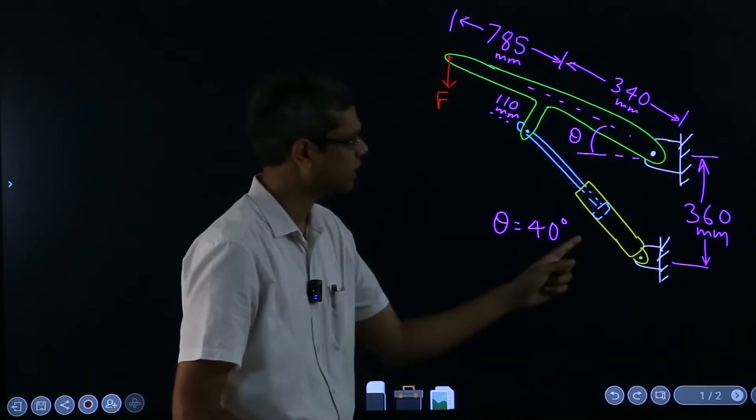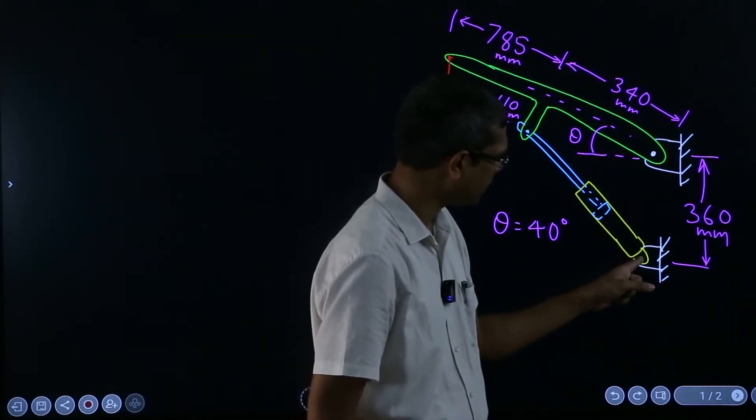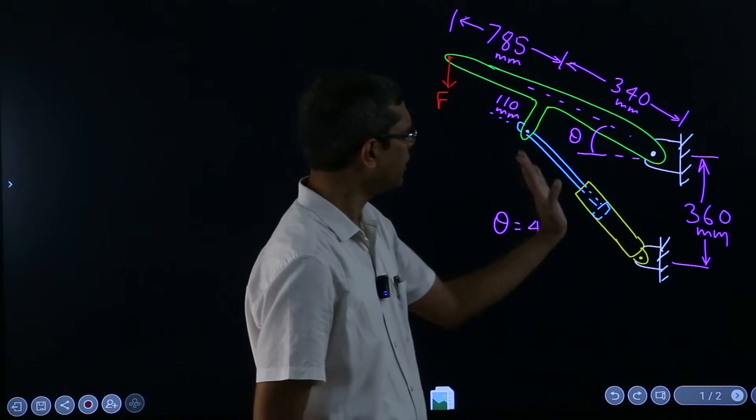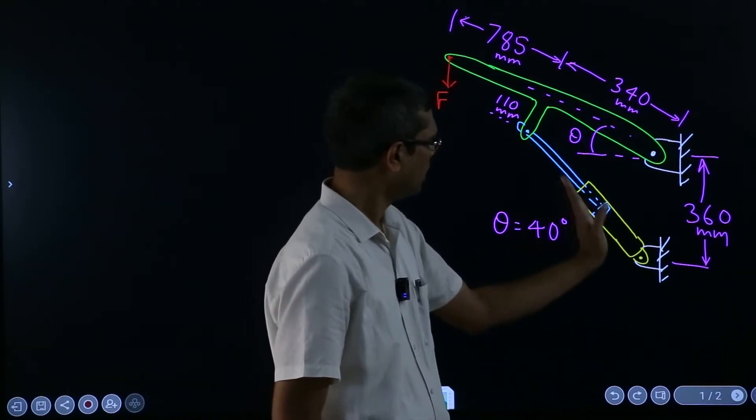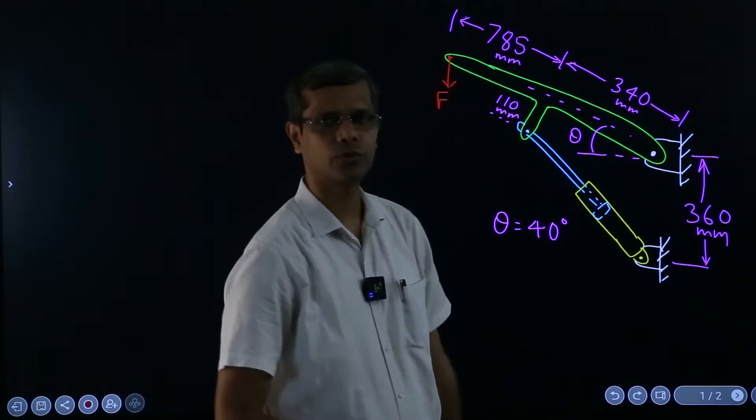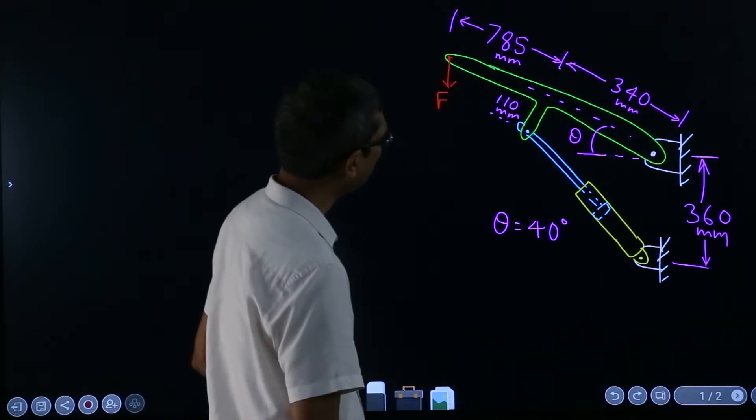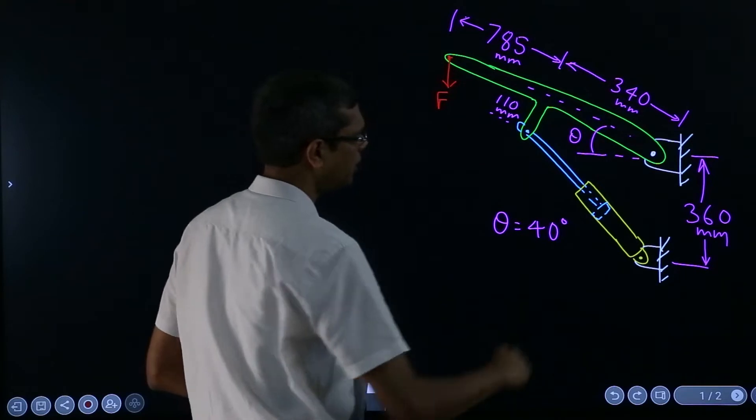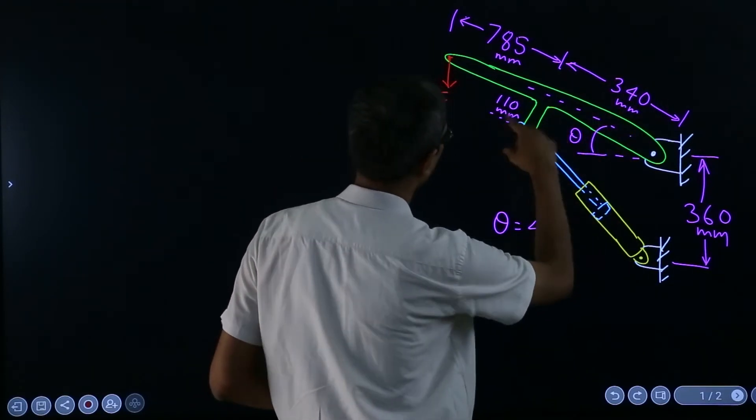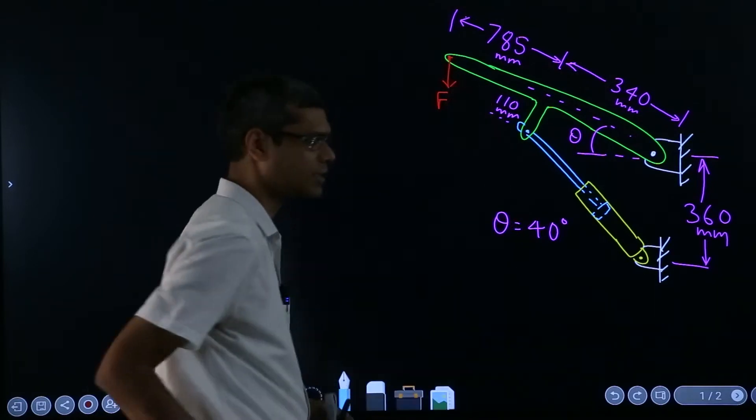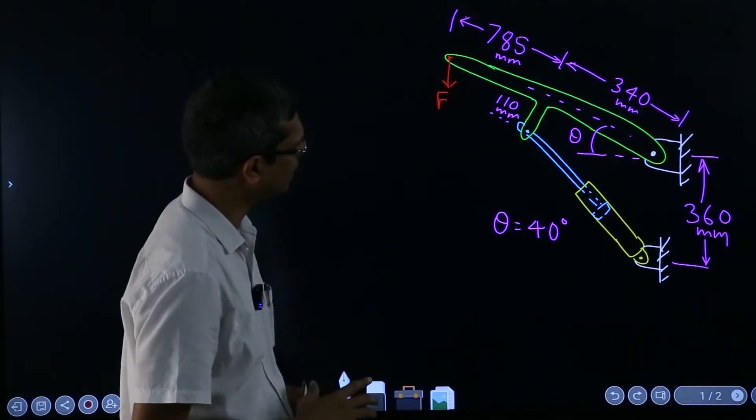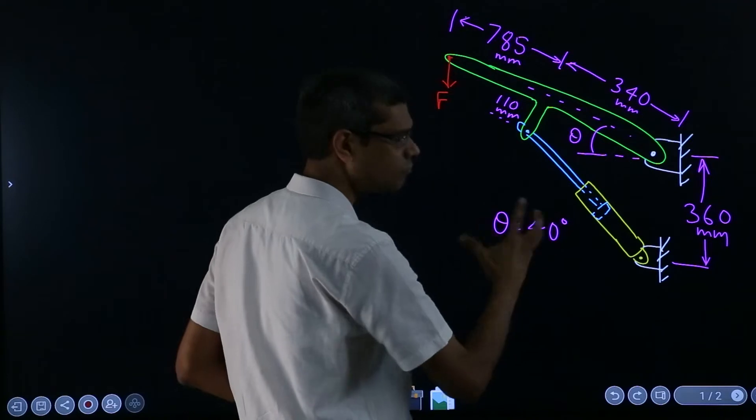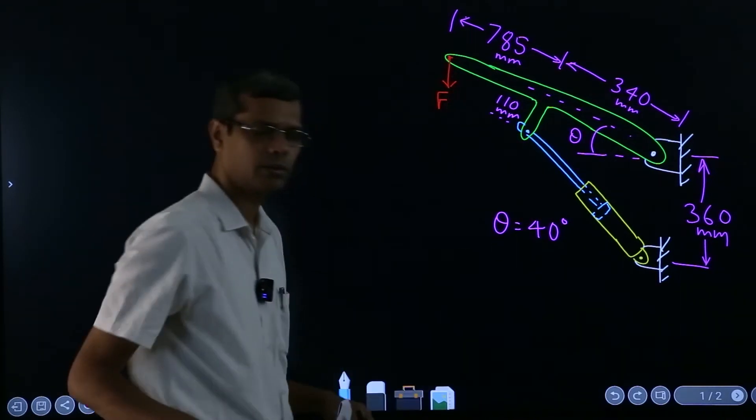It's a hydraulic system to apply a force in this direction, and here again it is hinged so that means this also can rotate. In whatever angle this piston rod is, it will apply the force in that direction because these are hinge points. Then it can lift this force whatever is coming here. So this is a mechanism to lift some weight attached at this point.